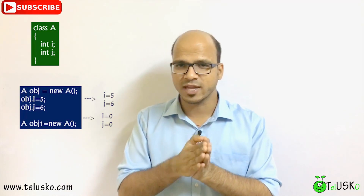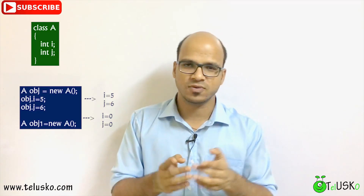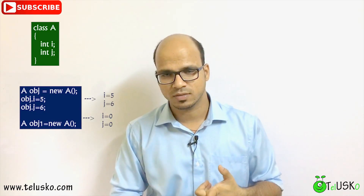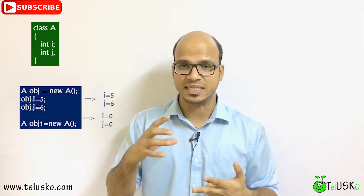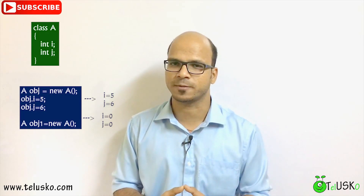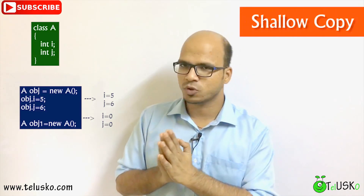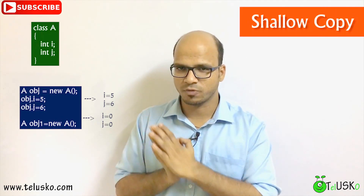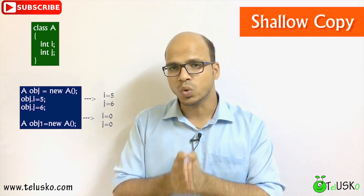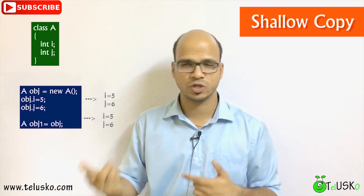This copy can be of three types: the first is shallow copy, the second is deep copy, and then we have cloning. For shallow copy, one way to copy an object is: don't create a new object, simply say A obj1 = obj.